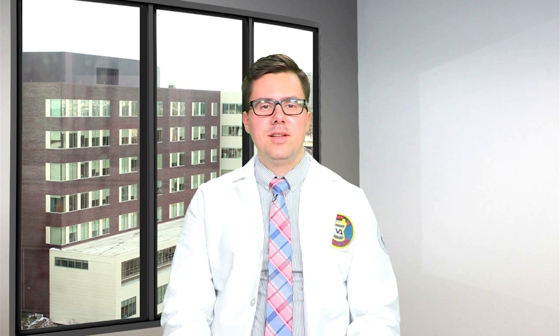The Erenumab autoinjector has a very short needle so the injection goes right under your skin, which is referred to as subcutaneous. The following areas of your skin are recommended for injection sites: your thigh, your stomach area at least two inches away around your navel, and the outer area of your upper arm.